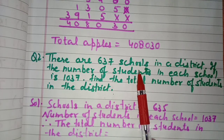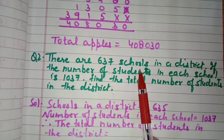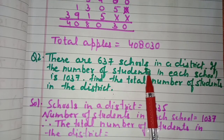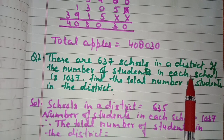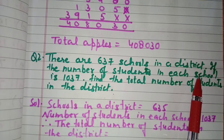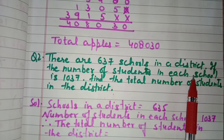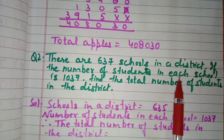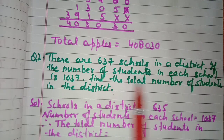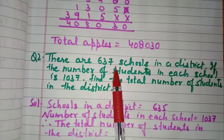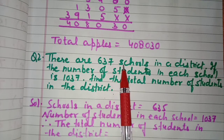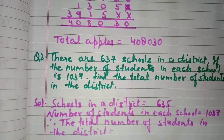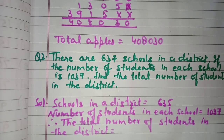Since the number of schools in the district and the number of students in each school are given, we can find the total number of students in 637 schools by multiplying.